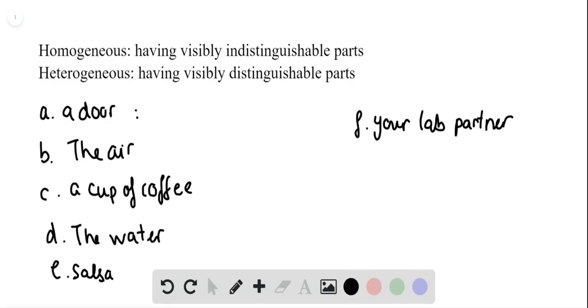So a door is heterogeneous because there are parts of it that you can see. The air is homogeneous.